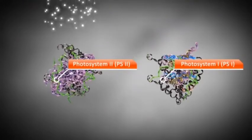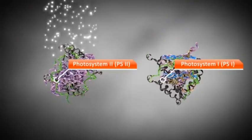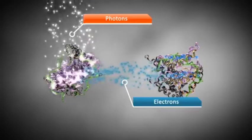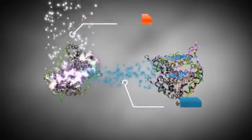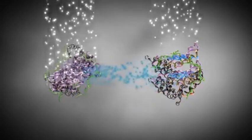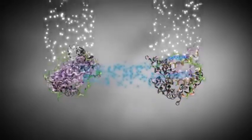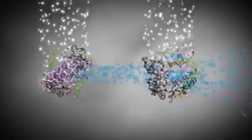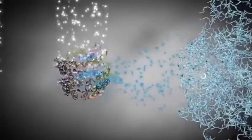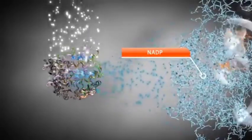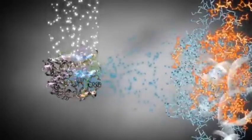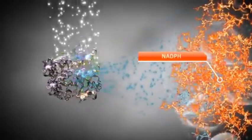The electrons transported from PS2 to PS1 are used to balance the loss of electrons in PS1, because PS1 absorbs light and this results in the oxidation of PS1 and the release of electrons. Electrons coming from PS1 are transported through an electron transport chain to their final electron acceptor, NADP, creating NADPH.